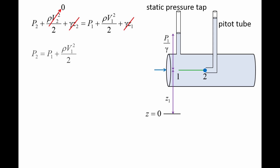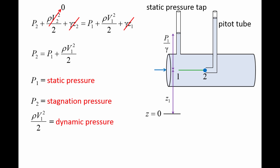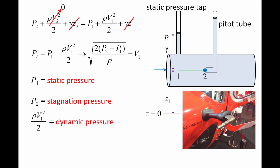We are left with p2 equals p1 plus rho v1 squared over 2. p1 is sometimes called the static pressure, and p2 is called the stagnation pressure because it is the pressure obtained when a fluid particle is decelerated to zero velocity. rho v1 squared over 2 is the dynamic pressure because it is related to the motion of the fluid. If we solve the equation for v1, we can determine the velocity of the flow by measuring the difference between the stagnation pressure and static pressure. A pitot-static tube is an L-shaped device that can measure this pressure difference and is often found on the side of aircraft, such as the helicopter shown here. The difference in pressure is then used to determine the aircraft's speed.